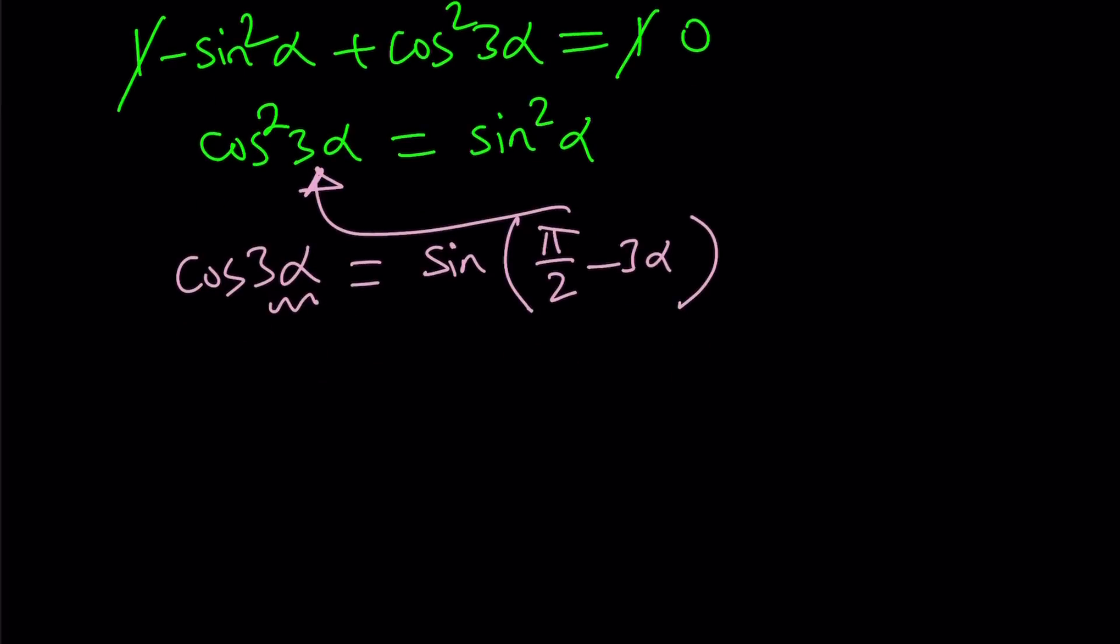you're going to get sine squared pi over 2 minus 3 alpha equals sine squared alpha. Okay,